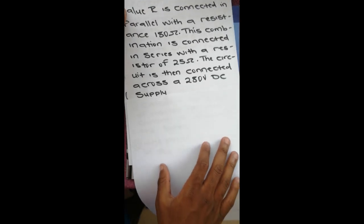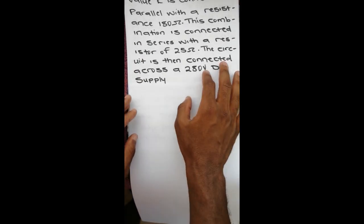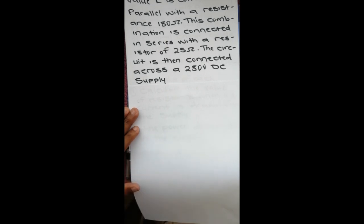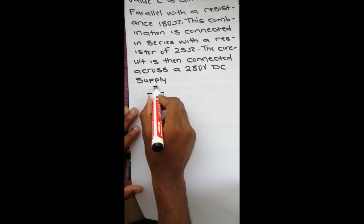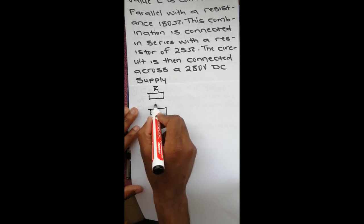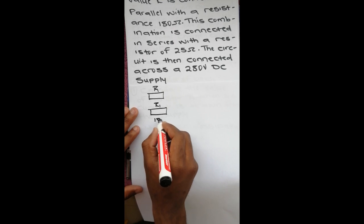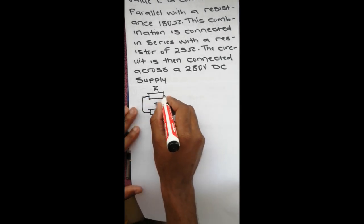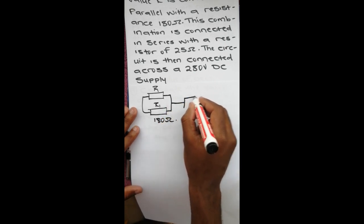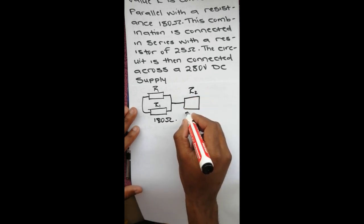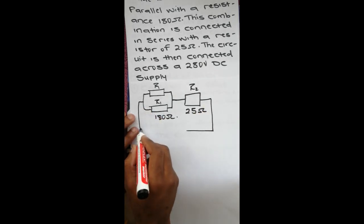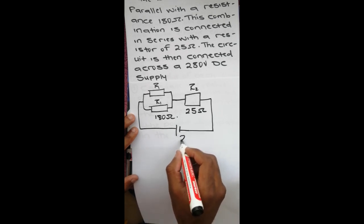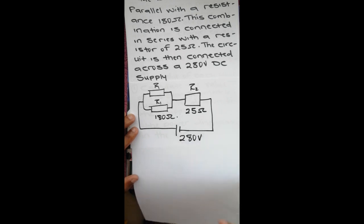We are told that a resistor R is connected in parallel with another resistor — let's call it R1, which is 180 ohms. They are connected in parallel, and then connected in series with another resistor, R2, which is 25 ohms. This is then connected to a DC supply of 280 volts.